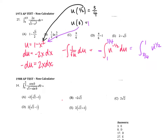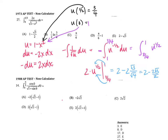Taking the antiderivative, u to the negative 1/2 becomes u to the positive 1/2, and dividing by 1/2 is the same as multiplying by 2, evaluated from 3/4 to 1. Plugging in the upper bound: 2 root 1 equals 2. Minus 2 times the square root of 3/4, which is root 3 over root 4, leaving me with 2 minus 2 root 3 over 2. The 2's cancel, and I'm left with 2 minus root 3.